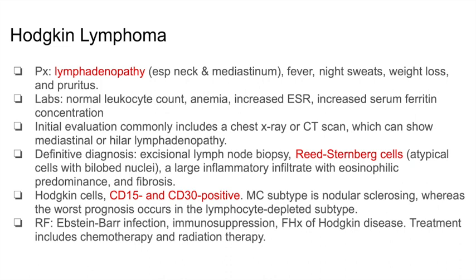ESR and ferritin are indicators of inflammation and can be elevated in cancers as well. A chest X-ray or CT scan will reveal mediastinal or hilar lymphadenopathy, but for a definitive diagnosis of Hodgkin's lymphoma, you should do an excisional lymph node biopsy, which can reveal Reed-Sternberg cells — atypical cells with bilobed nuclei. You can also see Hodgkin's cells that are CD15 and CD30 positive. The most common subtype is nodular sclerosis, while the worst prognosis is the lymphocyte-depleted subtype. Risk factors include Epstein-Barr infection, immunosuppression, and family history. Treatment is chemotherapy and radiation therapy.